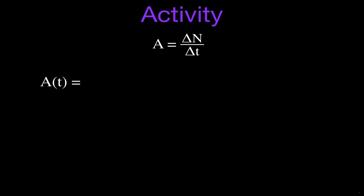A second equation says that the activity at some time T is equal to lambda times the number of radioactive nuclei at that same time T. Lambda here is not wavelength — it is the decay constant, which we'll discuss in just a moment.